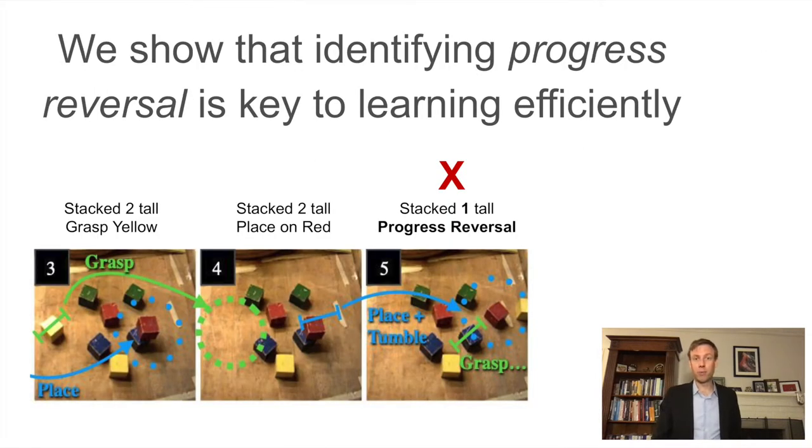We also show that identifying progress reversal is key to learning efficiency. Like if that dog were to go for the low-value treat even though you commanded them to leave it. Here we have an example with three actions. The robot has already made a stack of two, and here it grasps that yellow block then places it on top of the red block to try and make a taller stack, but the blocks are off-balance and everything tumbles. That's progress reversal right there. All of your previous work is undone.